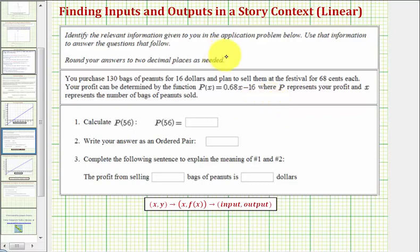In this question, we'll find a function output and function input in a story context. You purchase 130 bags of peanuts for $16 and plan to sell them at the festival for 68 cents each. Your profit can be determined by the function p(x) = 0.68x - 16, where p(x) represents your profit and x represents the number of bags of peanuts sold.